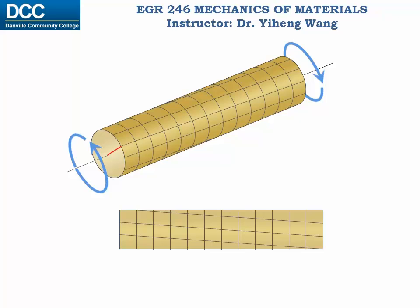After deformation, the initial rectangular grid has now become a parallelogram shape. We know that this shape change, or the change from the right angles, is characterized by the shear strain gamma. Also this red line drawn earlier has moved from its initial position to its current position, twisted by an angle of phi, known as the angle of twist.